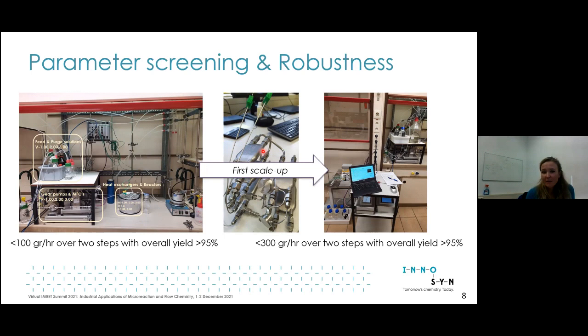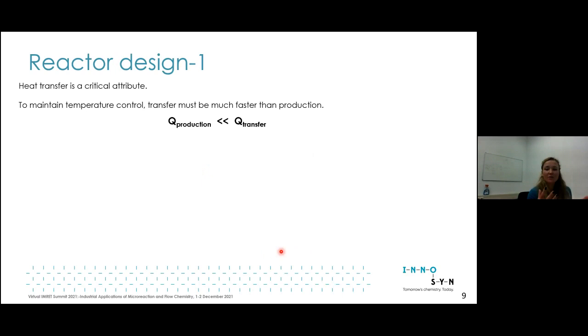We check the robustness and go to 3D printed zigzag reactors that are implemented into a larger cryostat. The robustness study is performed and at that point, depending on residence times, you can produce more than 300 grams per hour of material. The data you get brings you to the reactor design.